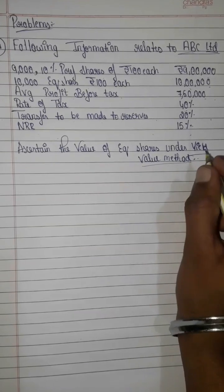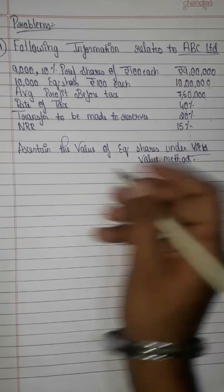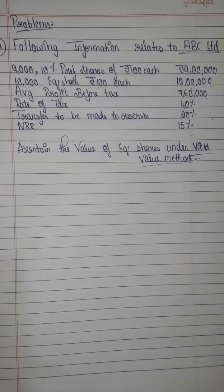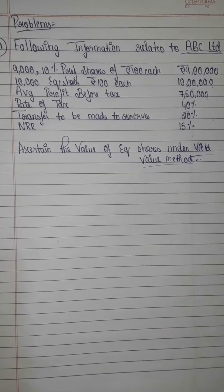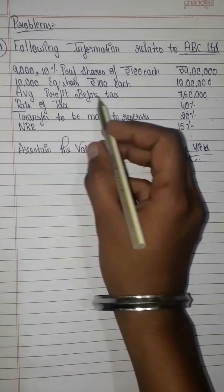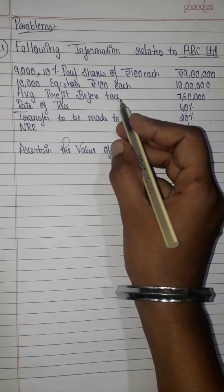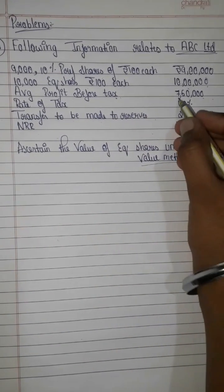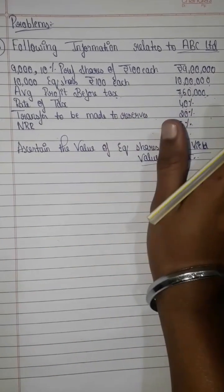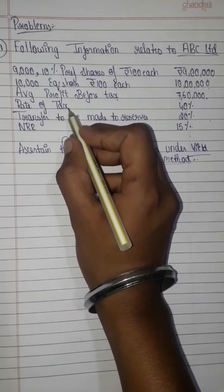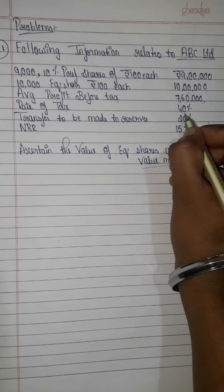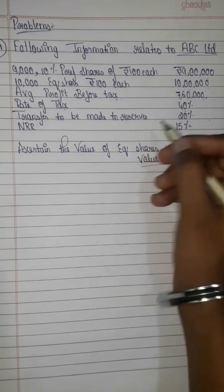Step 1 is calculation of adjusted average profit. Since the profit does not fluctuate, we use the simple average method. The average profit before tax is mentioned as 7 lakh 50,000. We need to apply the rate of tax of 40% to get the profit after tax.